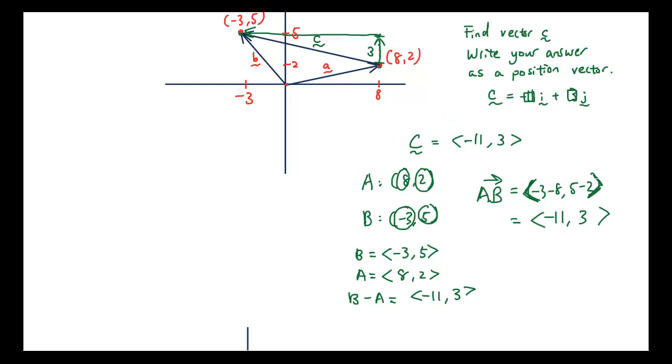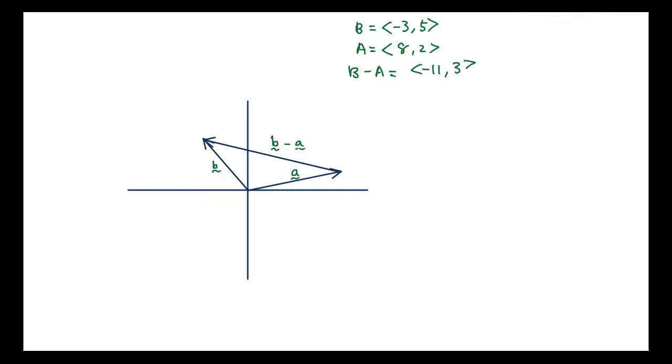So why does that work? Because if you think about it this way, we have minus A. So if I reverse the vector A, if I reverse this, then I would be going... So if I start over here, let's start somewhere else. And if I go minus A, so I start over here...